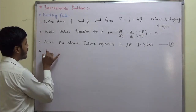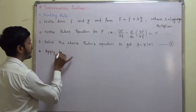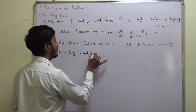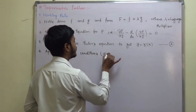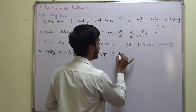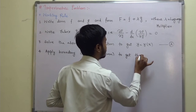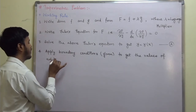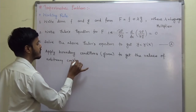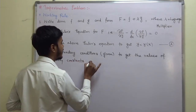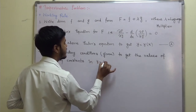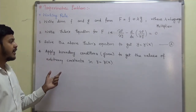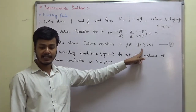The next step — step four — is to apply the boundary conditions, which will be given to you, to get the values of the arbitrary constants in y equal to y of x. Whatever boundary conditions are given, make use of them to find the values of those arbitrary constants.